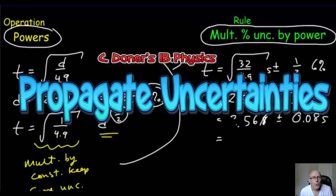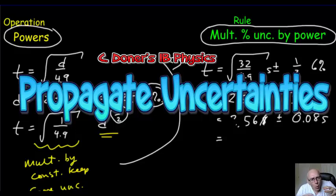We're going to take a look at how we propagate uncertainties. That is, when we make calculations based on our raw measurements, what happens to the uncertainties in those calculated quantities?